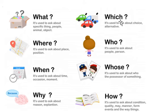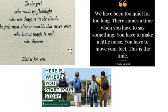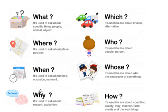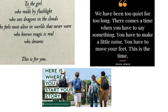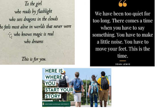Let's see some sentences. 'The girl' — referring to a person, a place, time, or reason — 'the girl who reads by flashlight, who sees dragons in the clouds, who feels most alive in the world that never works, who knows magic is real, who dreams.' So I'm talking about the girl who reads by flashlight, who sees dragons in the clouds, who feels alive in a world that doesn't exist, who knows magic is real, and who dreams. 'Who' was used many times here because we're referring to a person.